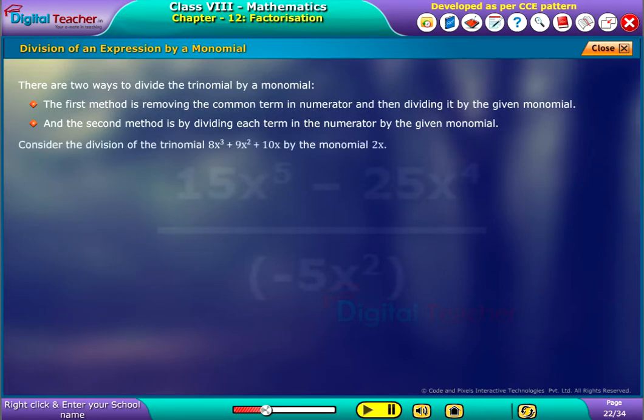Consider the division of the trinomial 8x³ + 9x² + 10x by the monomial 2x. The solution is as follows.